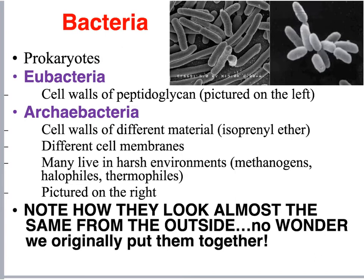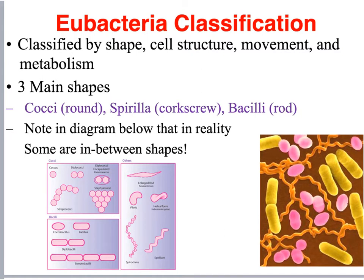Visually we can't easily tell eubacteria and archaebacteria apart, but they are different. Eubacteria come in many different shapes and are differentiated by their structures, whether they're motile or not, and their metabolism. The three main shapes are round or cocci, corkscrew or spirilla, and hot dog or rod shape, called bacilli.